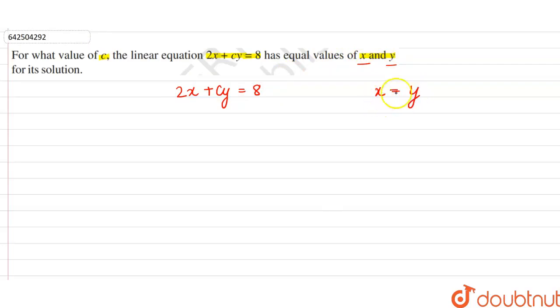Now we can substitute the value of x or y in the given equation. Let's take x = y. So 2y + cy = 8. Therefore, cy = 8 - 2y, and c = (8 - 2y)/y.